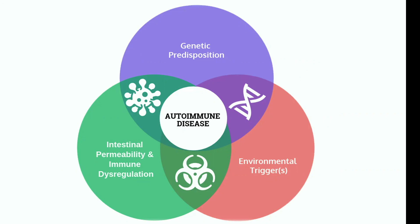Together, these factors are what cause your immune system to go rogue and start attacking your own tissues. Most importantly, these are the factors that need to be addressed in order to stop the attack and put your body back into a state of remission.